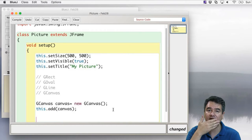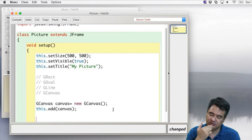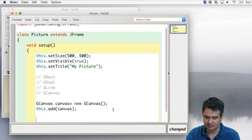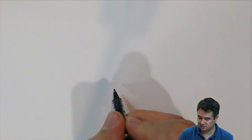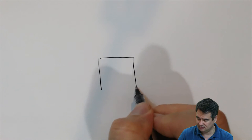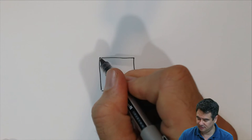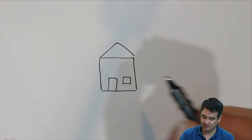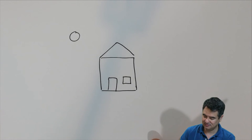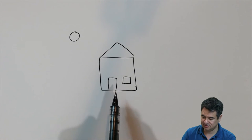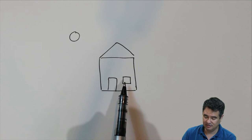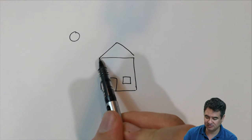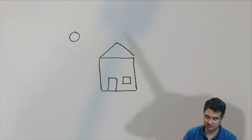Let's make a basic picture — a house. That would be a rectangle with a pointed roof, a door, and a window, plus a sun. We need a rectangle for the main body, one for the door, one for the window, lines for the roof since we don't have a triangle, and an oval for the sun. Unfortunately, we don't have a triangle, so we'll make the roof out of a couple of lines.